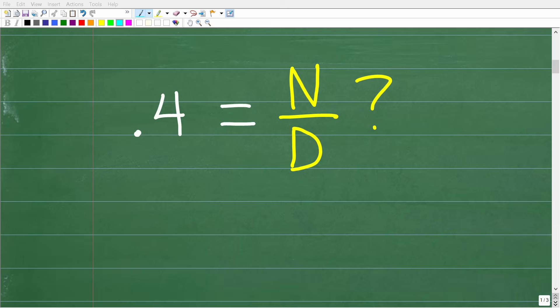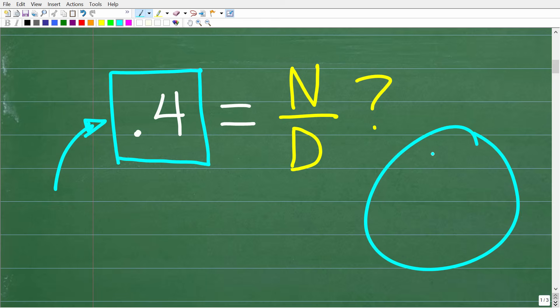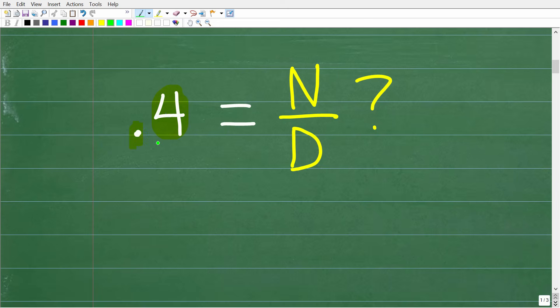The key to solving this problem is how you say this decimal. Some of you might be saying, 'Come on, Mr. YouTube math man, I know what this is. It's 0.4.' Well, that's very good, and indeed it is 0.4. But there's another way we can say this decimal value, and this second way is the key to unlocking the answer.